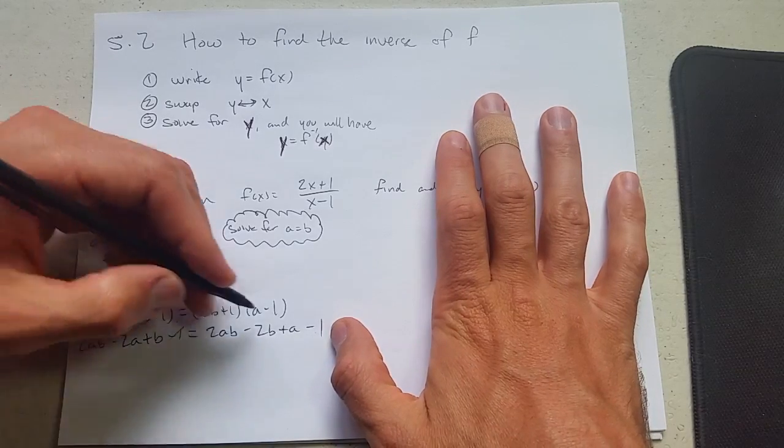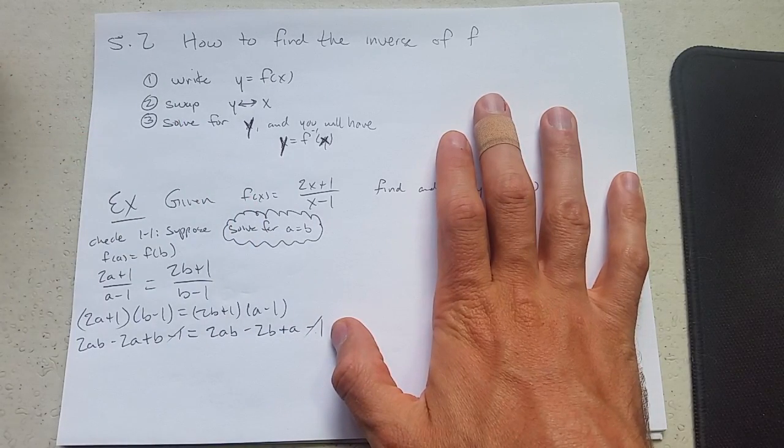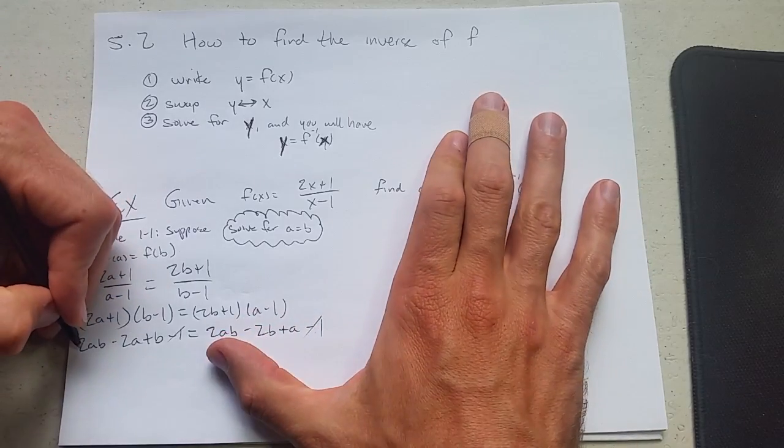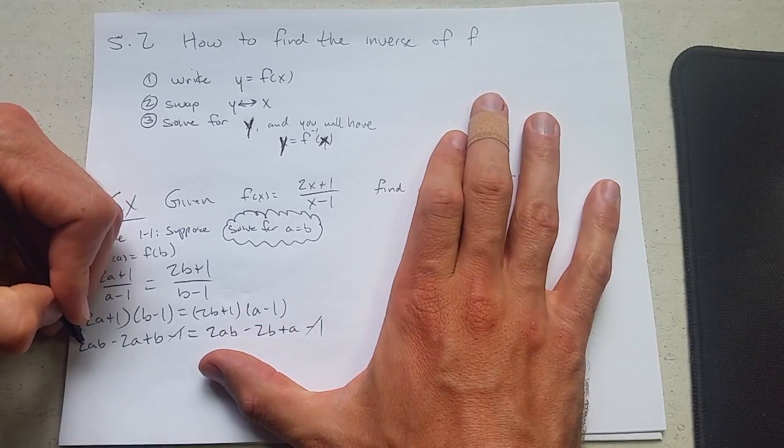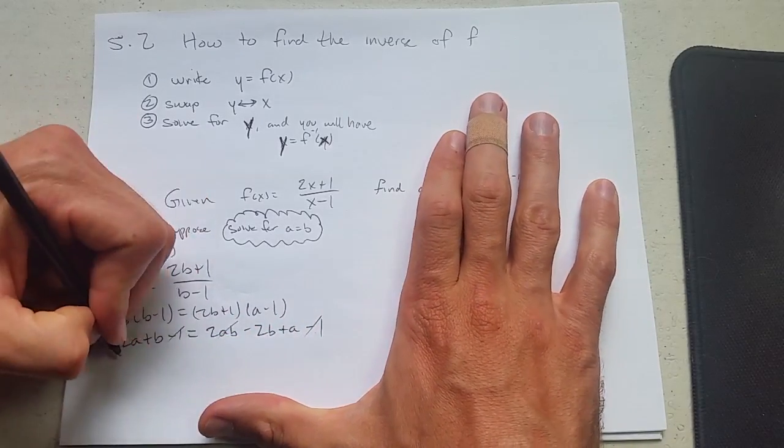Add one to both sides. Those will cancel. 2ab, 2ab. We'll subtract 2ab from both sides. Those will cancel.